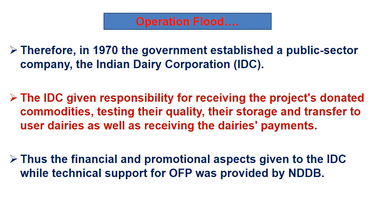IDC was given the responsibility for receiving the project's donated commodities under the World Food Program — receiving, testing, storing, and transferring them to user dairies, as well as receiving dairy payments. Specifically, commodities like skim milk powder and butter oil were recombined to produce milk, which was sold to generate money for the Operation Flood Program. Thus, the financial and promotional aspects were handled by IDC, whereas the technical support for the Operation Flood Program was provided by NDDB.